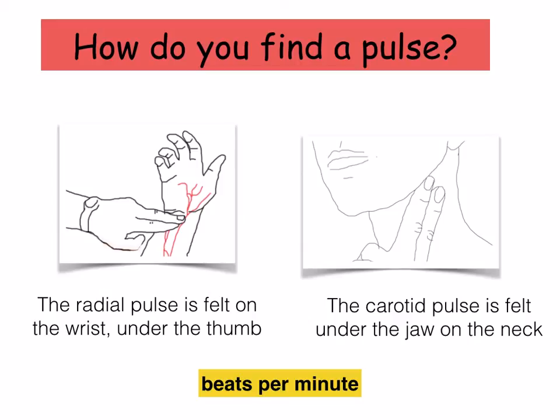So how do you find a pulse? When you're looking for a pulse, you need to feel for an artery flowing close to the skin and over a bone or tendon, so you can easily feel the surges of blood with each heartbeat. The best places are in your wrist just under your thumb, or on your neck under the jaw, as you can see in these pictures here. The pulse is measured as beats per minute. If you are fit, your resting pulse rate will be low, and it will quickly return to normal after exercise.